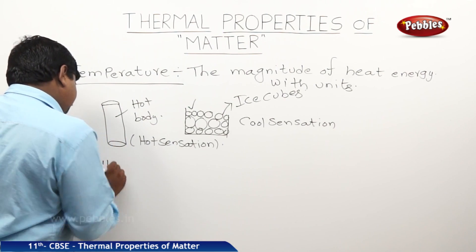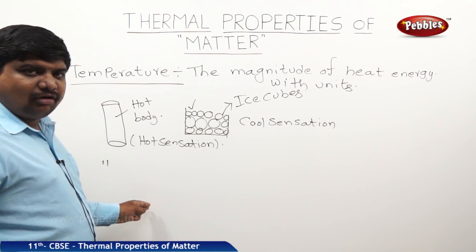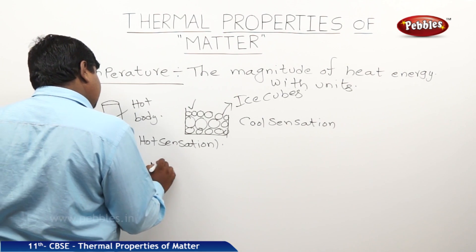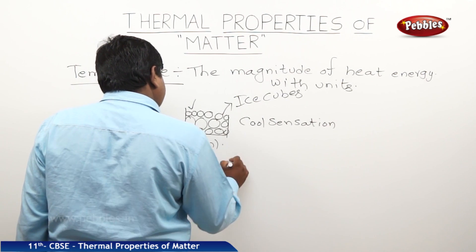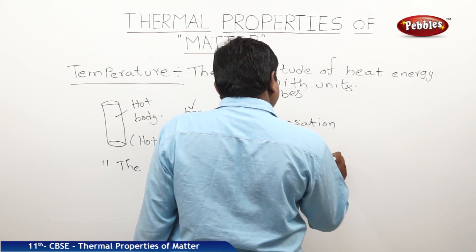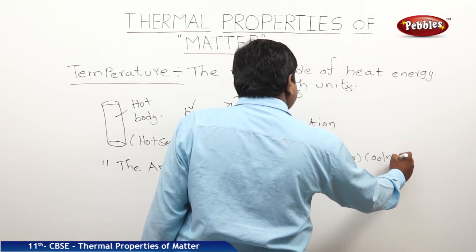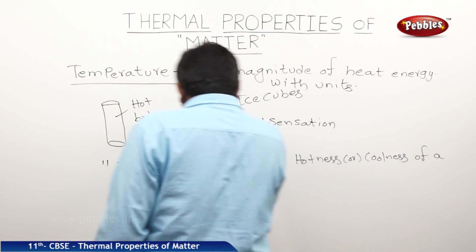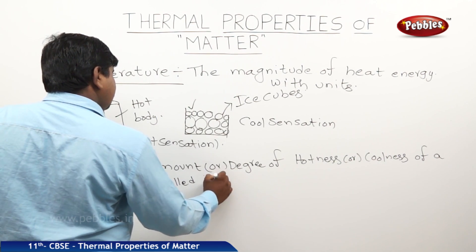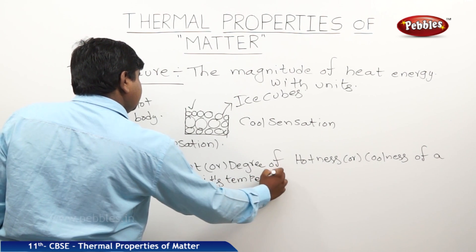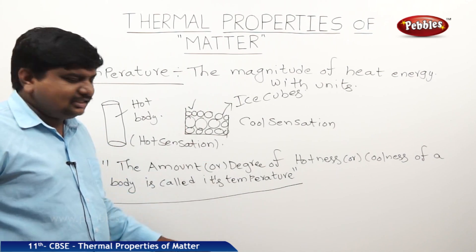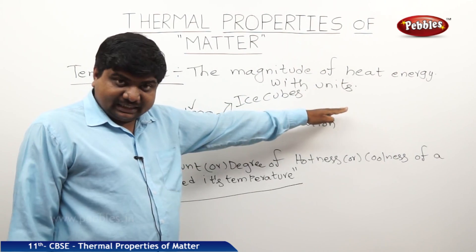One more easy definition for temperature: the amount of hotness or coolness of a body is called its temperature, or the degree of hotness or coolness of a body is called its temperature. This amount or degree means it should be expressed with a numerical value with units.